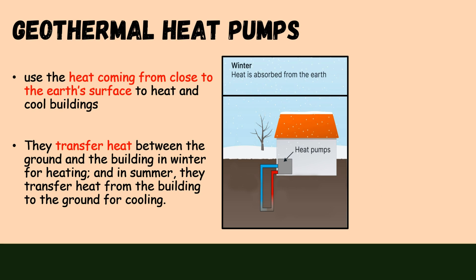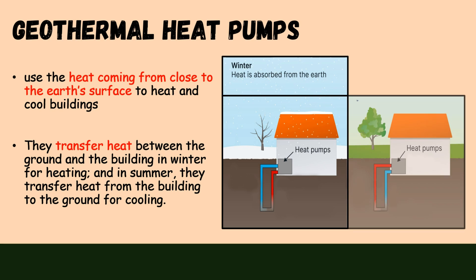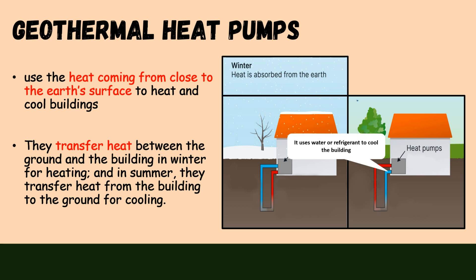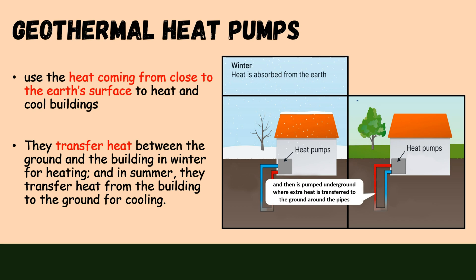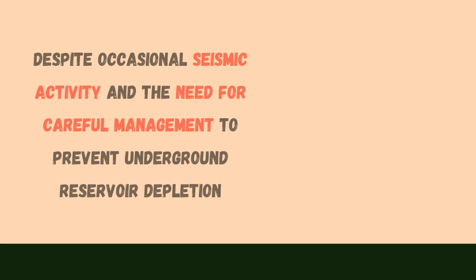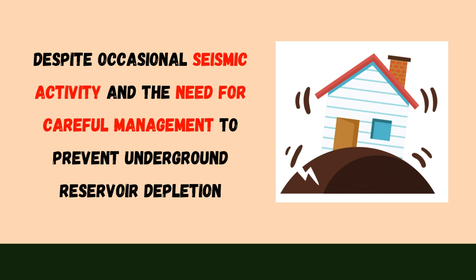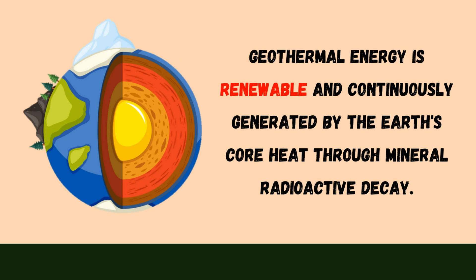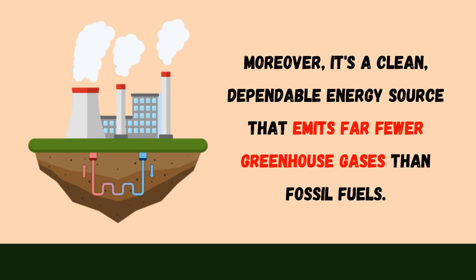In short, heat is absorbed from the earth to warm the building. In summer, the system can operate differently. It uses water or refrigerant to cool the building and then dissipates underground where extra heat is transferred to the ground around the pipes. Thus, heat is discharged into the earth to cool the building. Despite occasional seismic activity and the need for careful management to prevent underground reservoir depletion, geothermal energy is renewable and continuously generated by the earth's core heat through mineral radioactive decay. Moreover, it's a clean, dependable energy source that emits far fewer greenhouse gases than fossil fuels.